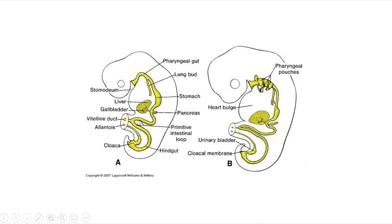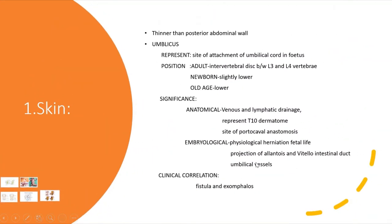The second embryological significance involves the projection of the allantois and the vitellointestinal duct. The proximal part of the allantois gives rise to the urinary bladder and the distal part gives rise to the urachus. The vitellointestinal duct is a diverticulum of the midgut extending from the distal ileum to the umbilicus. Thirdly, the umbilical vessels — two umbilical arteries and one umbilical vein — pass to and fro between the umbilical cord and the placenta.